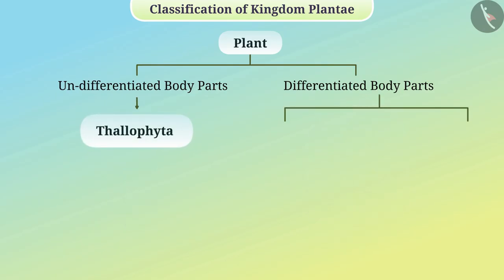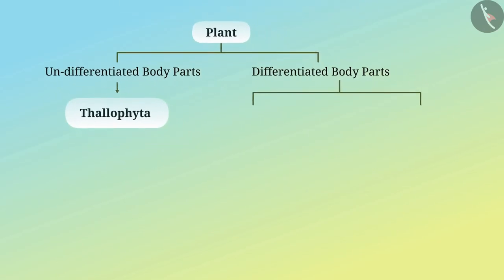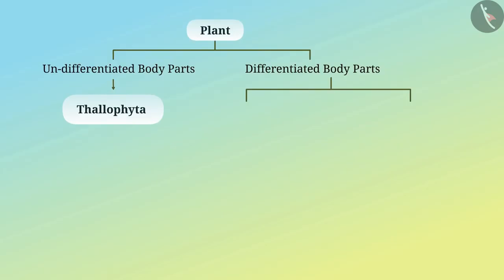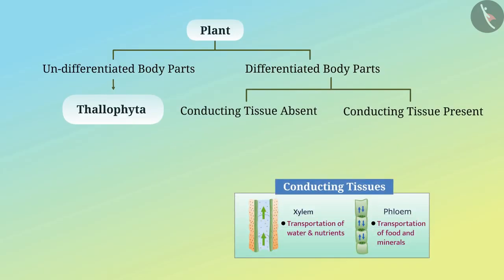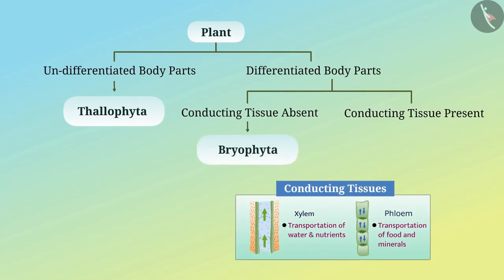The next level of classification is made on the basis of whether there are specific tissues for the transport of water and other substances in the body of the plants. Plants that do not have specific tissues for conduction in their body are placed in the subclass Bryophyta.